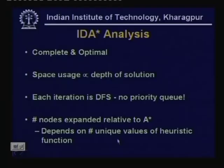IDA* obviously expands more nodes than A* because certain nodes are expanded more than once. How many more depends on the number of unique values of f(n). If between two iterations a large number of extra nodes are expanded, IDA* is fairly efficient. But consider the case when every node has a unique f value: in that case at every iteration only one new node will be expanded, and IDA* will expand a number of nodes equal to the square of the number A* expands.